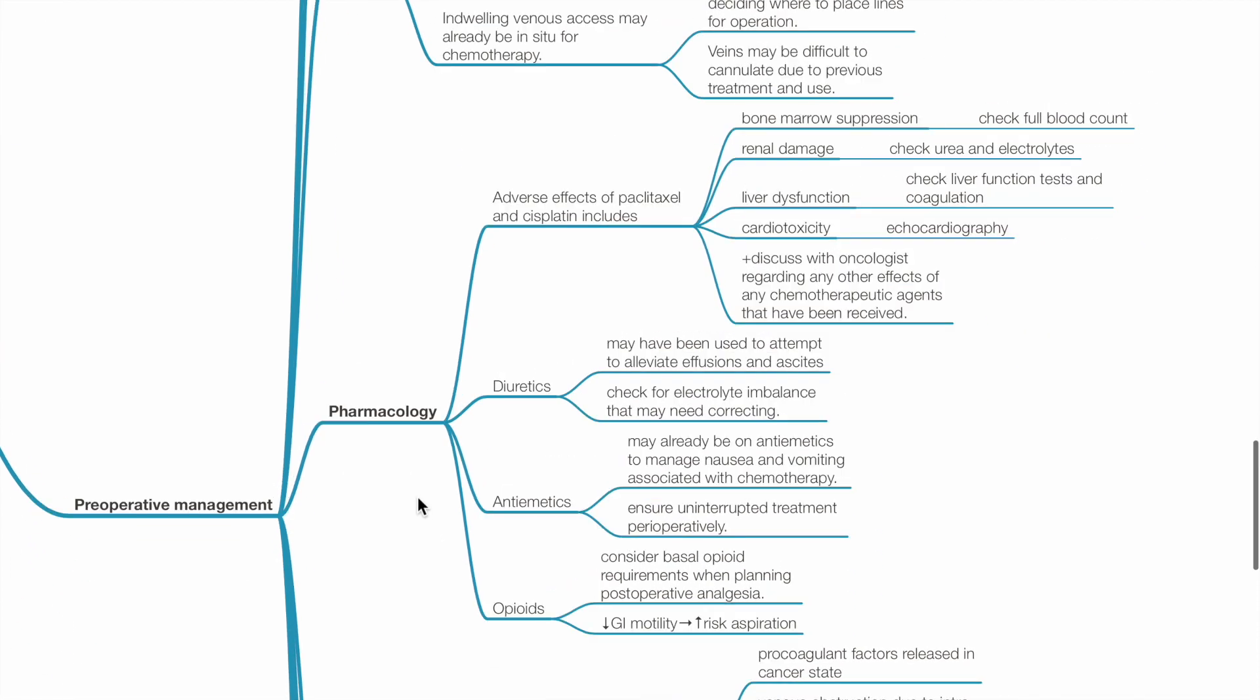Pharmacology. Adverse effects of paclitaxel and cisplatin, such as bone marrow suppression, should be checked via full blood count. Renal damage should be assessed via urea and electrolytes.